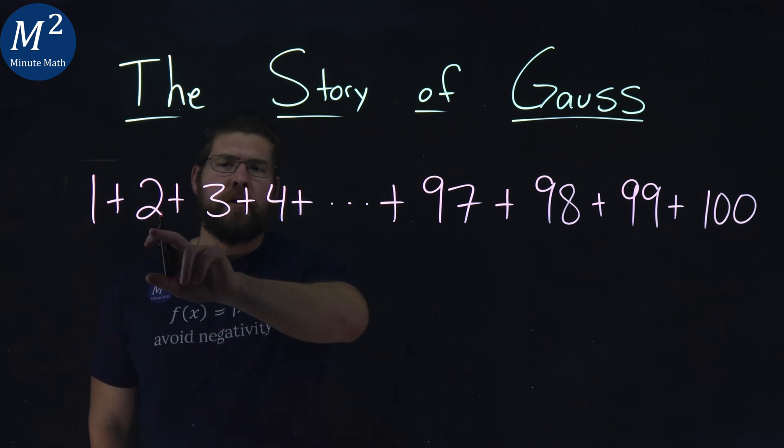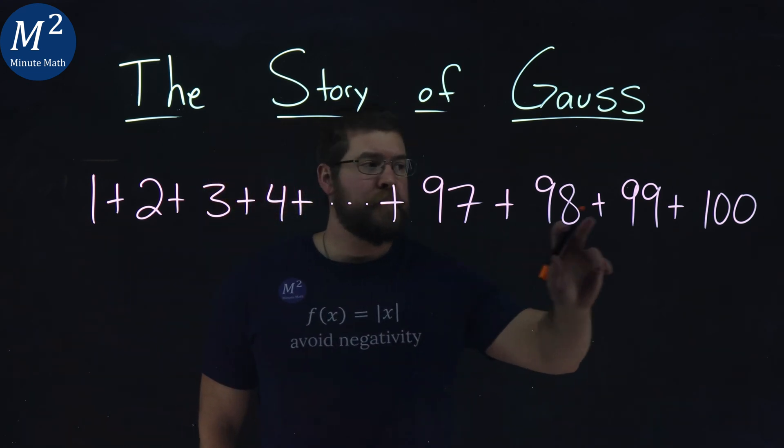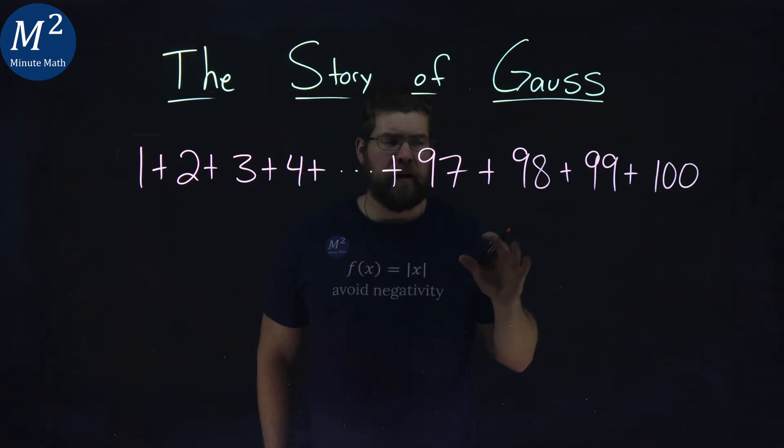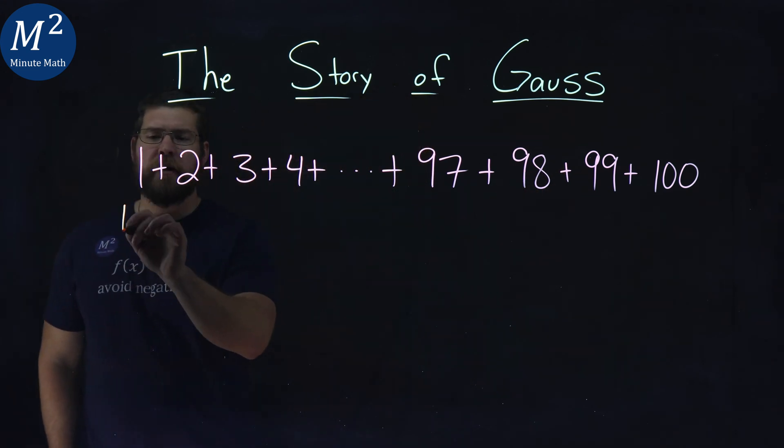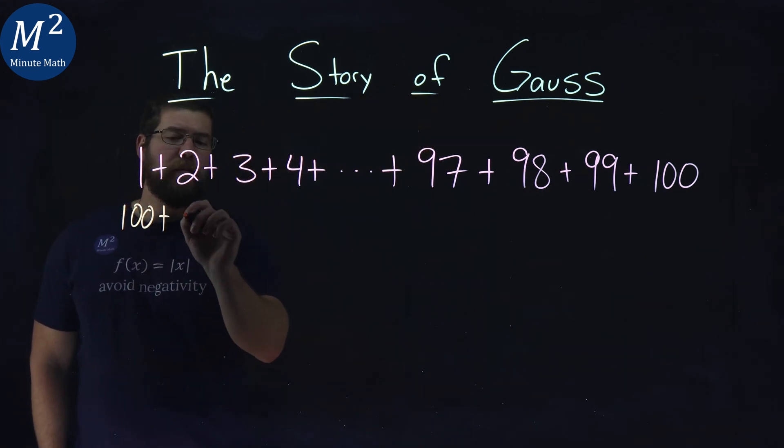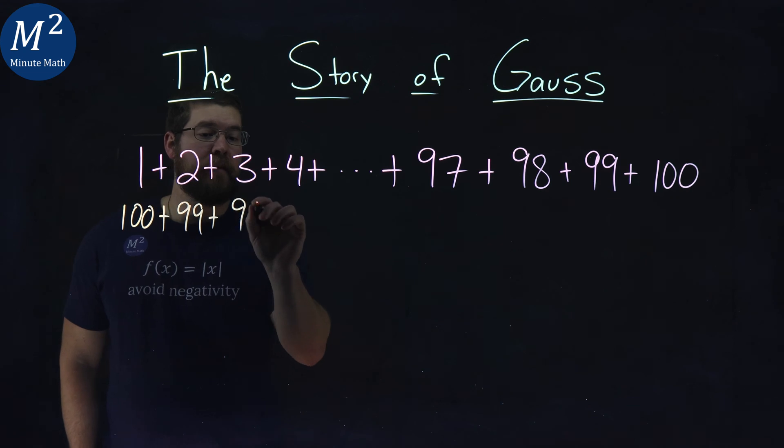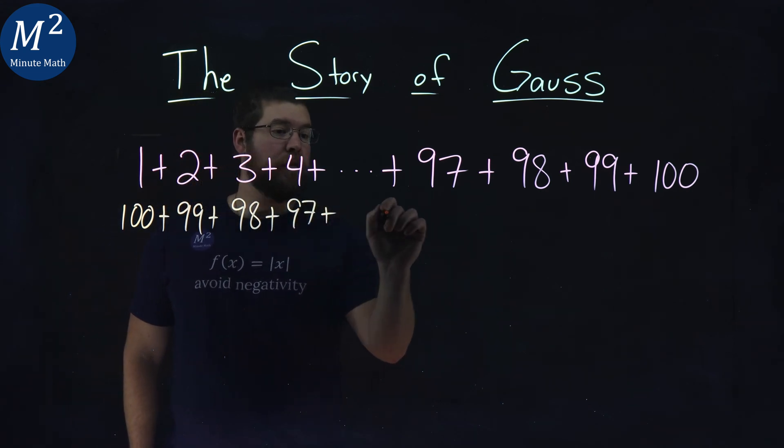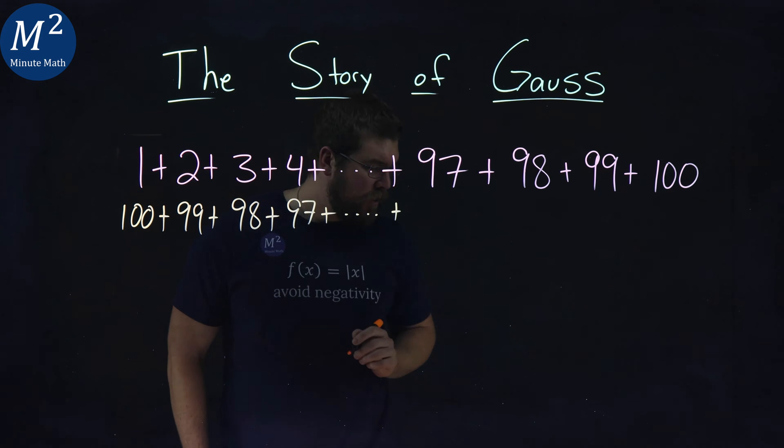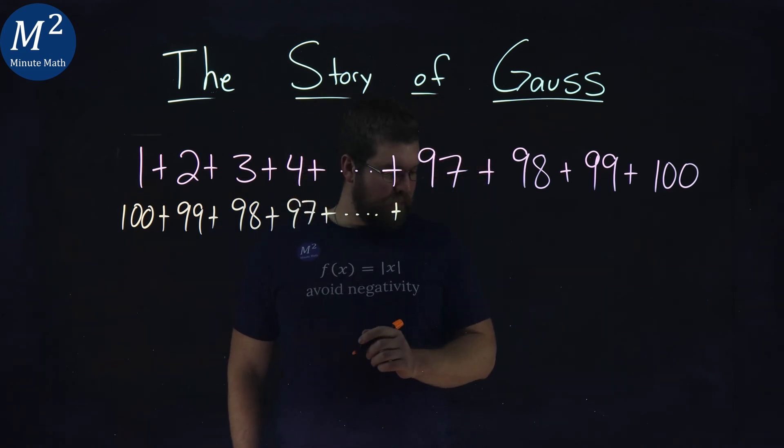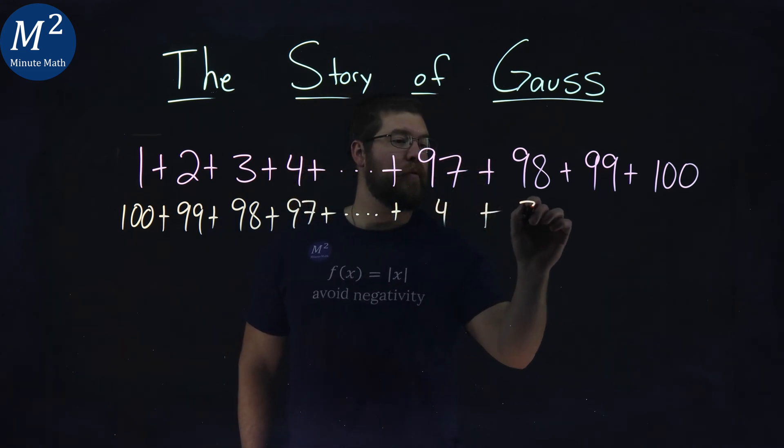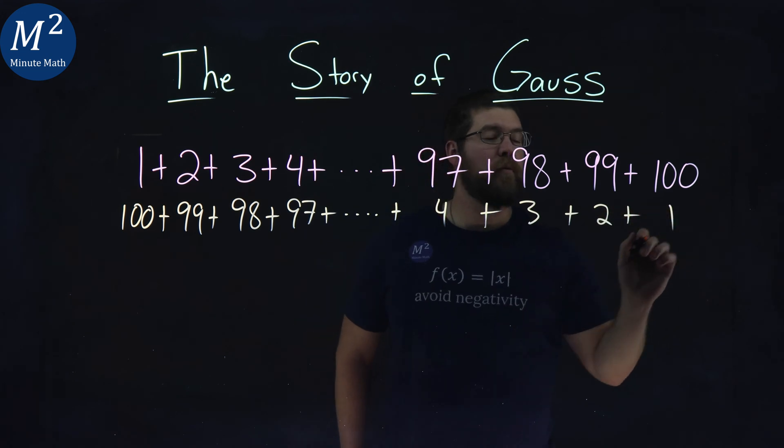When we notice here we have 1 plus 2 plus 3 plus 4 all the way to 100. When you decide, let's flip that around. Put 100 here. It's the same thing, plus 99 plus 98 plus 97 all the way down to 4 plus 3 plus 2 plus 1.